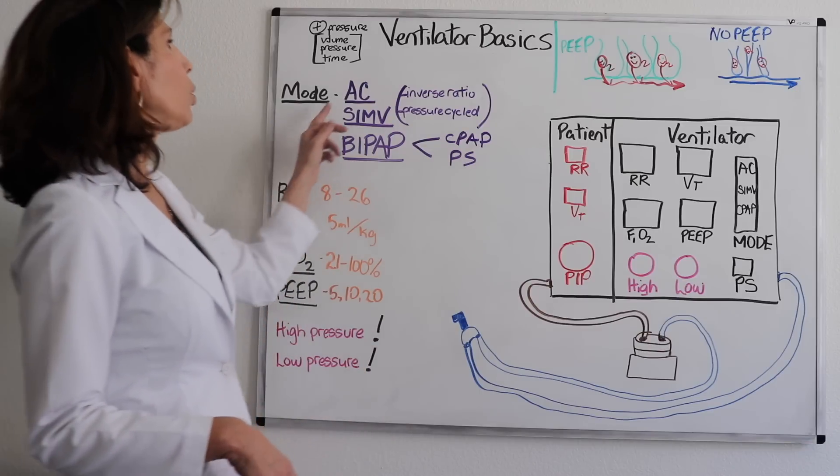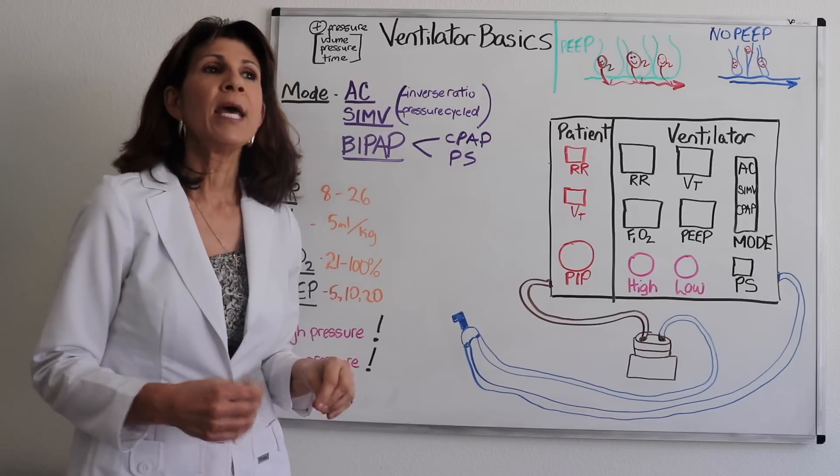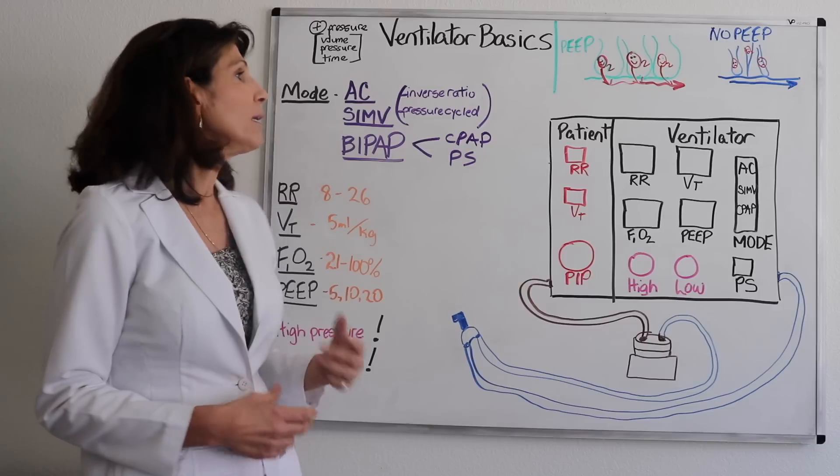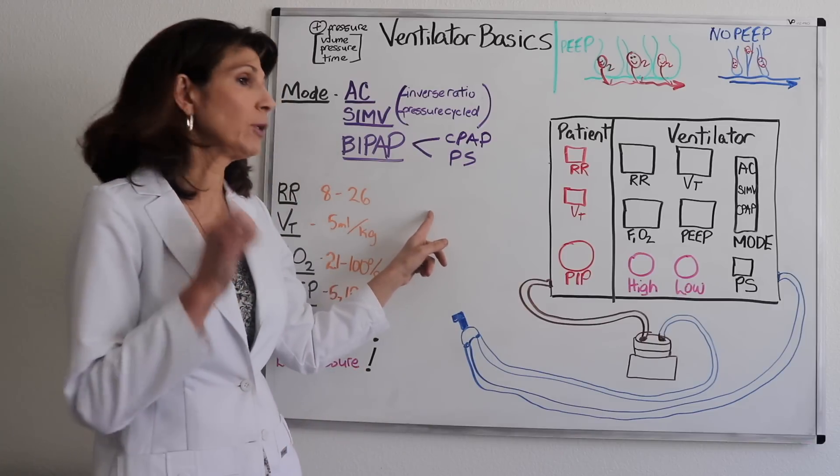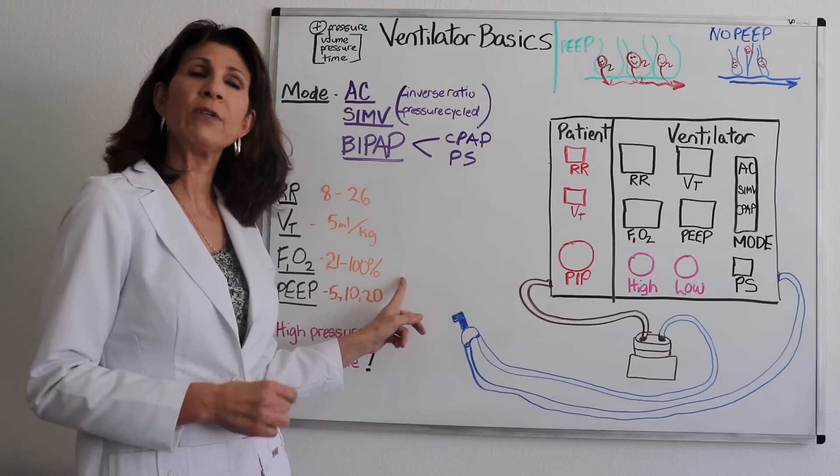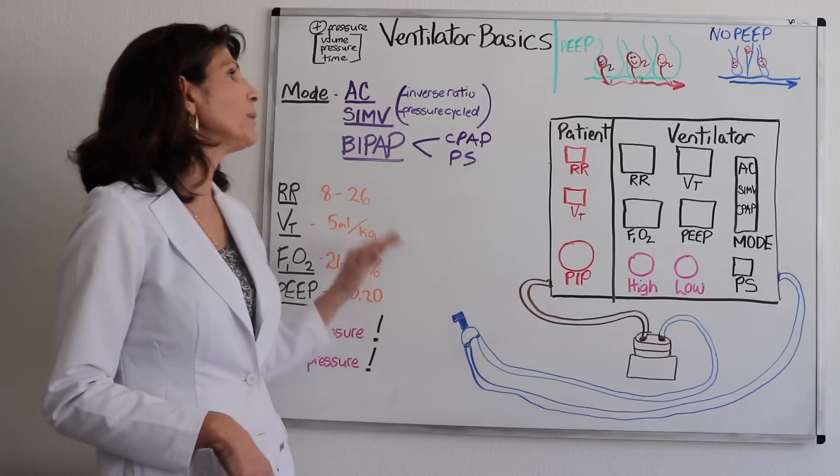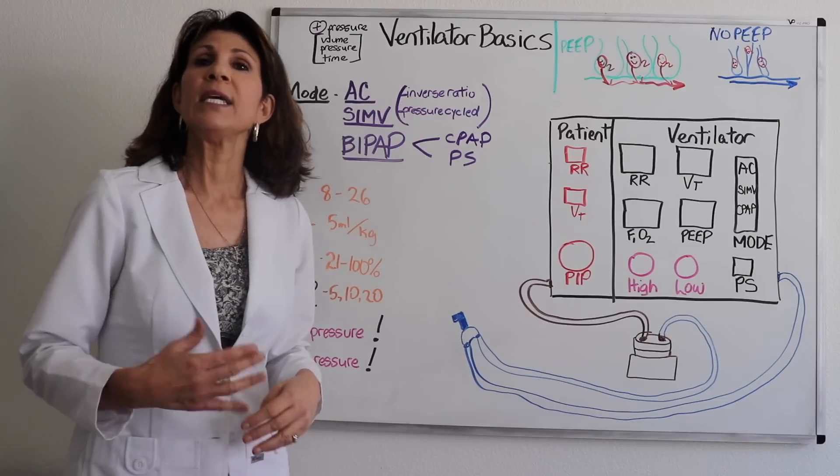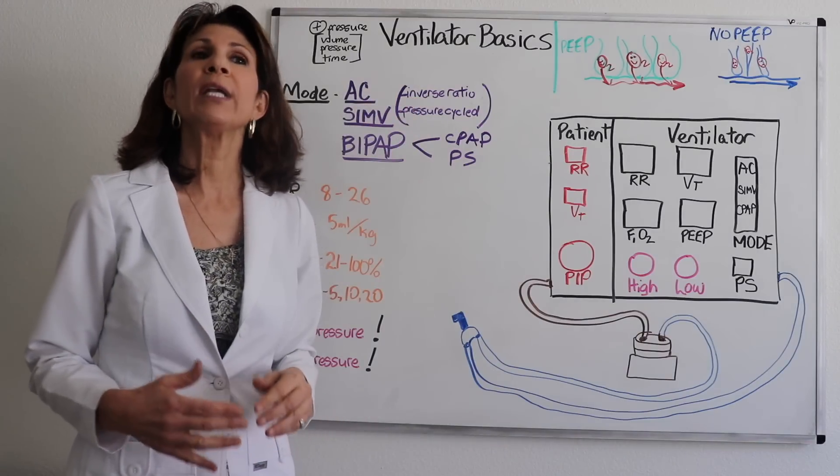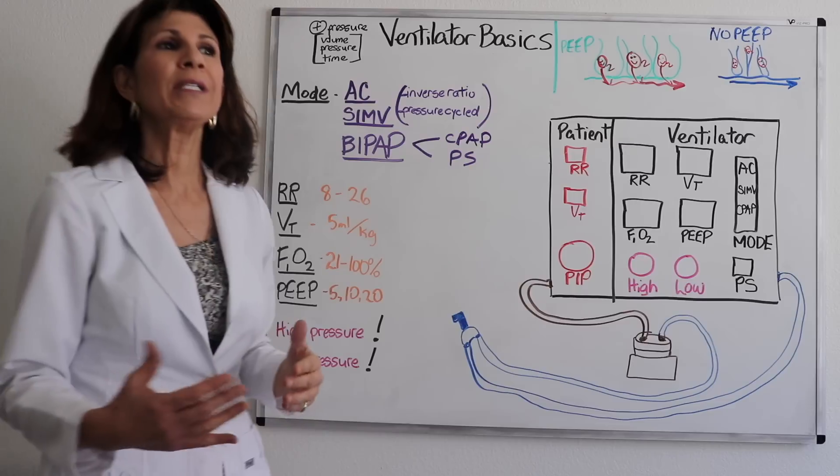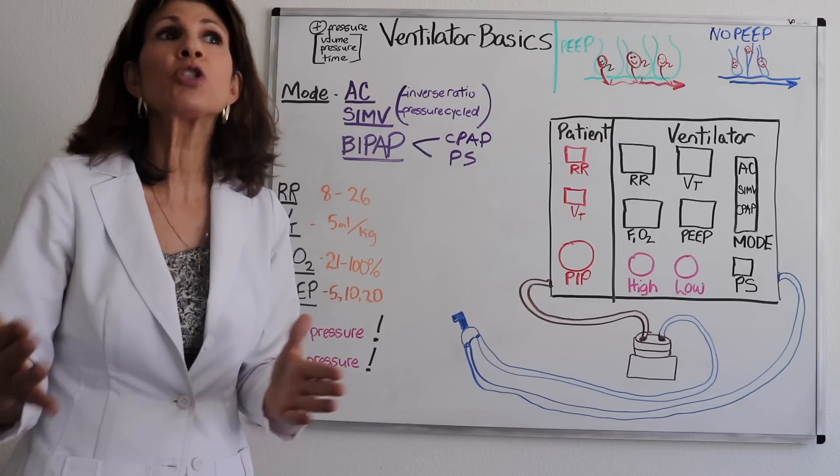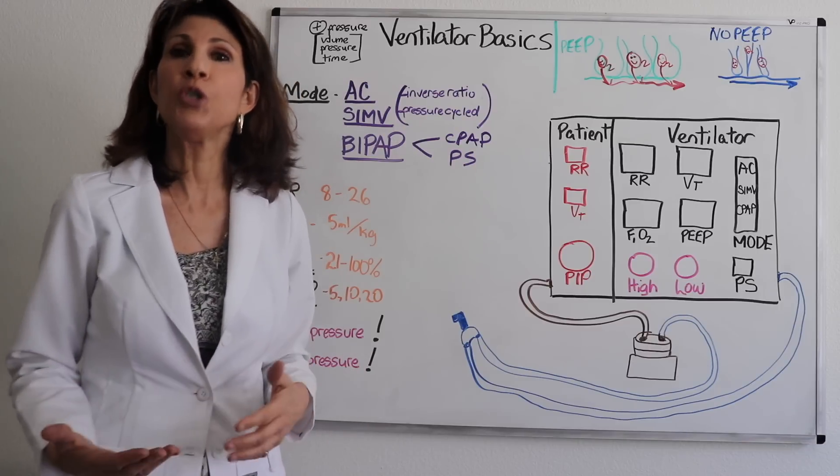We're also going to talk about the different modes. First of all, let's talk about assist control ventilation. Assist control ventilation provides the most support for ventilation. So it's going to give the patient their respiratory rate. That's going to be dialed in. It's going to give them a preset tidal volume with a preset FiO2 or fraction of inspired oxygen concentration. When the patient does initiate their own spontaneous ventilation, in this mode, assist control, the patient is still going to get a full tidal volume. So you can see it's full support and sometimes it may be too much support.